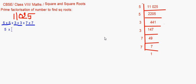Taking one factor from each pair: one 5, one 3, and one 7. Multiplying these: 5 × 3 × 7 = 105. So the square root of 11025 is 105.